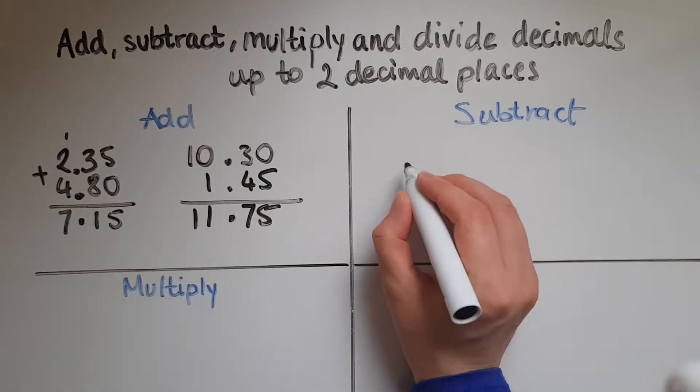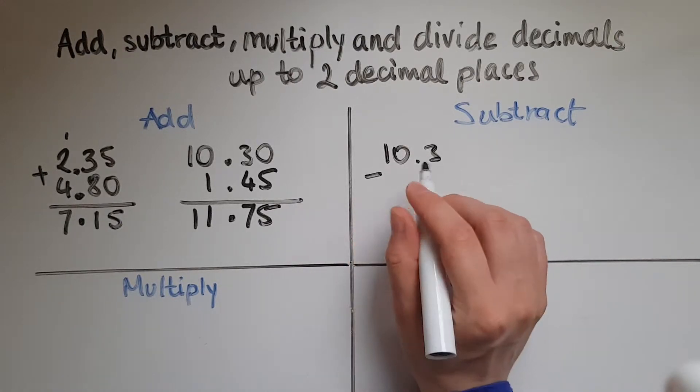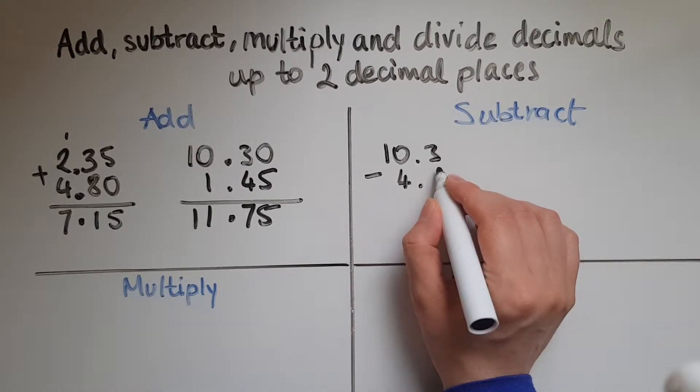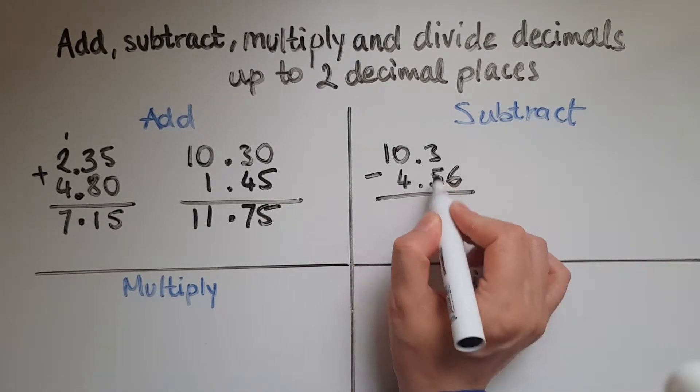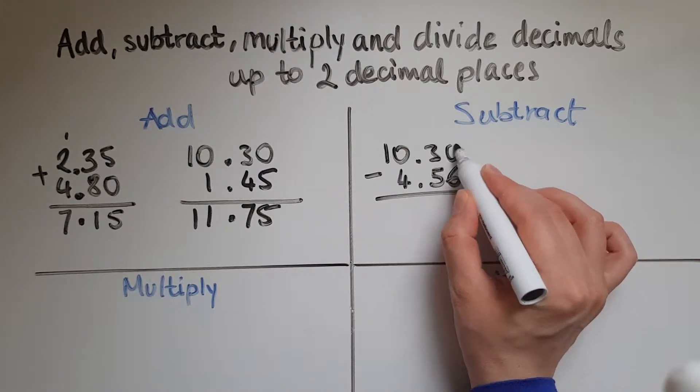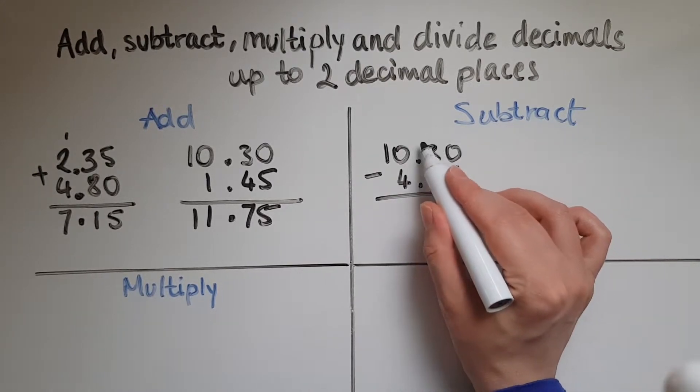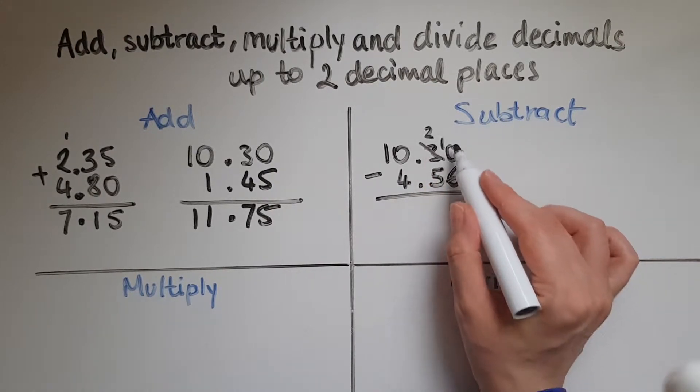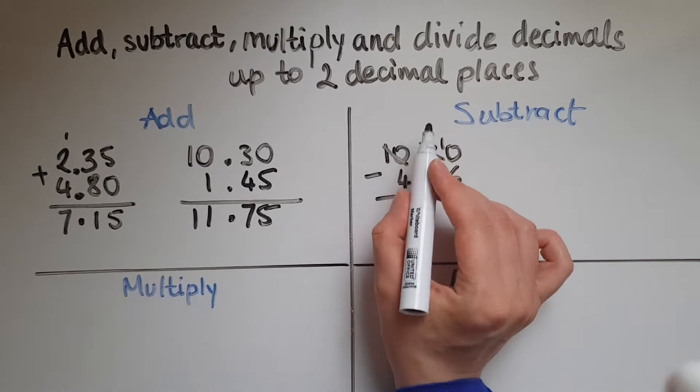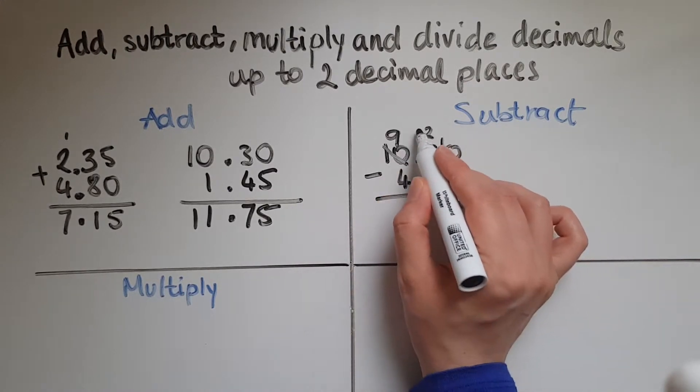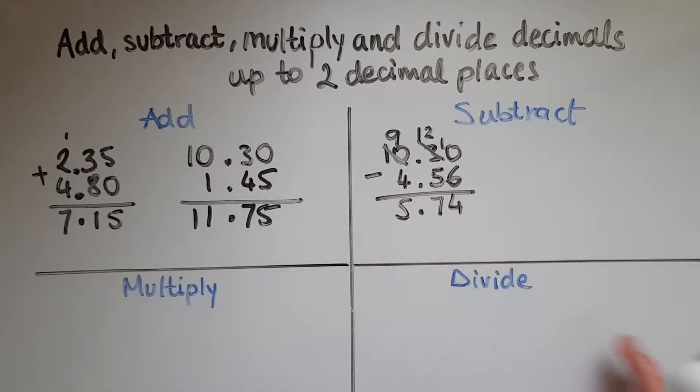Then subtraction. So let's say I want to do 10.3 minus 4.56. So again lined up. We have no digit here so I can fill it with a 0. 6 taken away from the 0 we can't do so we need to borrow 1 from the 3. So the 3 becomes the 2 and this becomes a 10. 10 take away 6 is 4. Now we need to take away 5 from the 2 which means we've got to borrow 1 from the 10 to make it 9 and this becomes 12. So 12 take away 5 is 7, 9 take away 4 is 5. So 5.74.